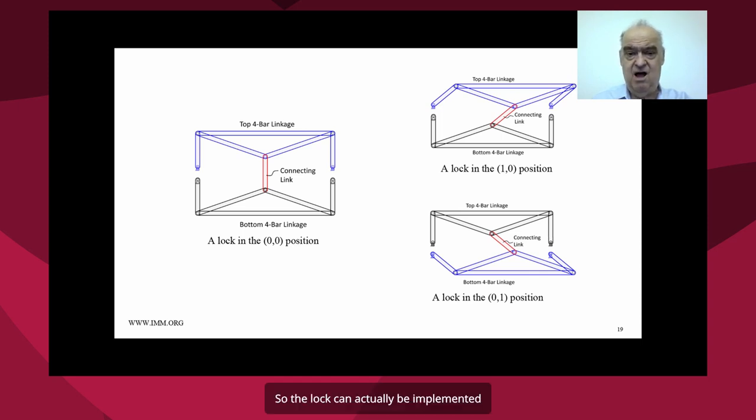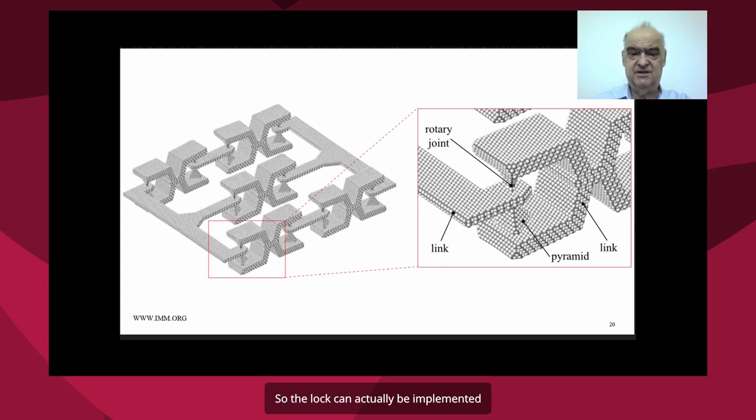So the lock can actually be implemented at the molecular scale. And you can see now, in this illustration, a possible molecular implementation, where you have acetylinic joints representing the rotary joints, or implementing the rotary joints, and diamond sheets of diamond implementing the links.